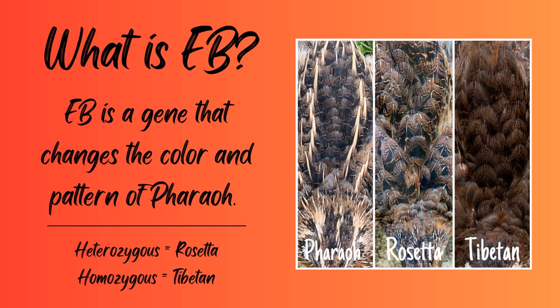So what is EB? EB is a gene that changes the color and the pattern of pharaoh. If you have one copy of the gene — that's called heterozygous — the name for that bird is Rosetta. If you have two copies of the EB gene, it's called Tibetan.